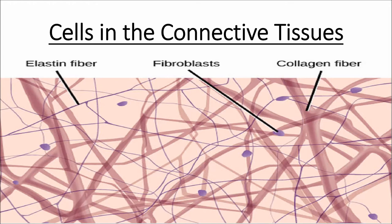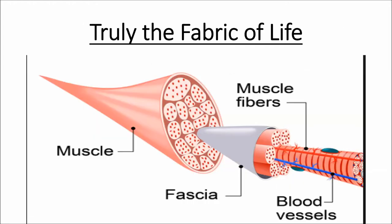The fascia is sponge-like and is truly the fabric of life, made up of its threads — the tendrils of life. Everything in the body, no matter how small the tissue, is surrounded by the fabric of life — fascia. You can see a muscle, muscle fibers, and blood vessels running between them, but everything is surrounded by fascia.